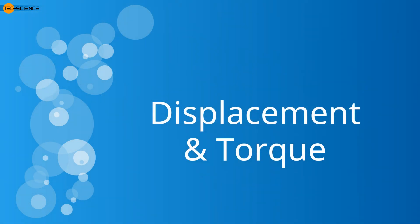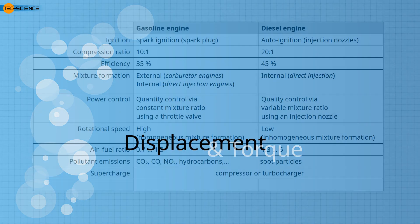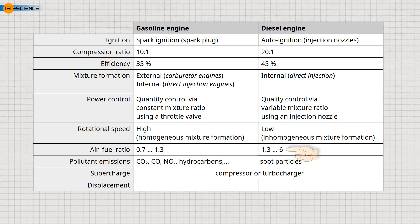As mentioned earlier, diesel engines operate at a significantly higher air-fuel ratio than gasoline engines, which means that there is generally less fuel in the cylinder for the same amount of charge. In addition, diesel engines have lower engine speeds, so less fuel is ignited in the same amount of time. Both of these factors reduce the power output of the diesel engine compared to the gasoline engine.